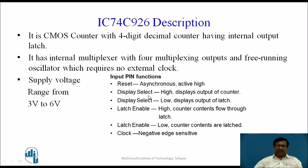Display Select, when high, displays the output of the counter directly; when low, it displays the output of the latch — meaning latch data is displayed. To display whatever is present in the counter, Display Select must be made high. Latch Enable is also active high — when high, counter contents flow through the latch; when low, counter contents are latched. The clock input to the counter is negative edge sensitive.